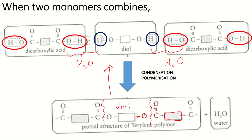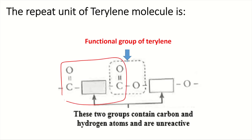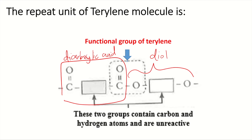After separating, one fragment with a single O bond is the diol, and the fragment with two C=O groups is the dicarboxylic acid. The repeat unit of terylene consists of both monomer fragments — one dicarboxylic acid unit and one diol unit — which together repeat many times along the chain.